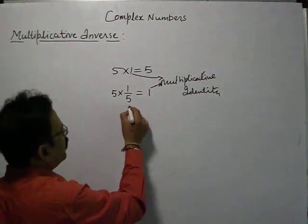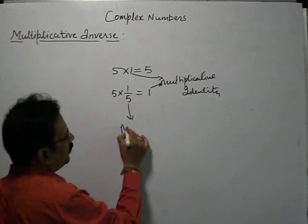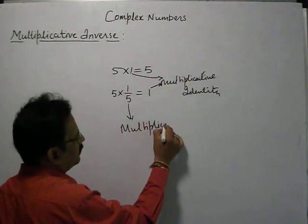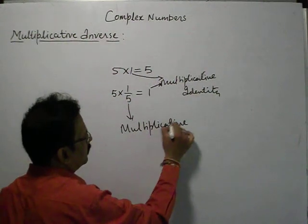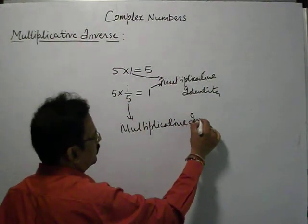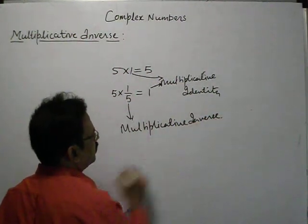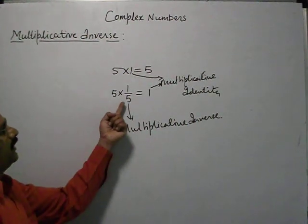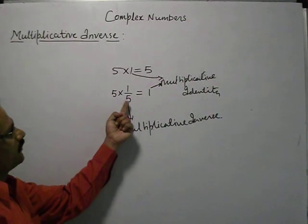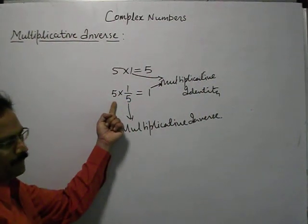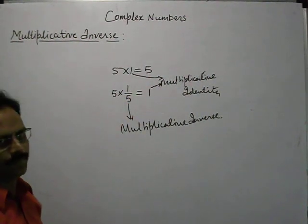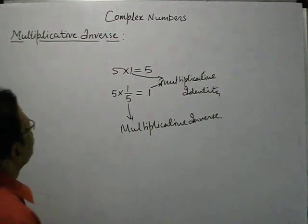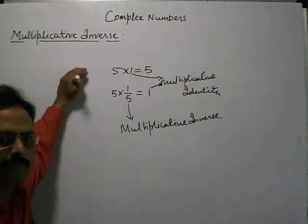And 1/5 is the multiplicative inverse. If we multiply the multiplicative inverse with a number, then we will get 1. Now we see how we get the multiplicative inverse of complex numbers.